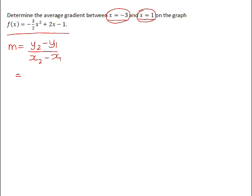If we want the y value when x = -3, we calculate the function value f(-3). If we want the y value when x = 1, we calculate f(1). Then in the denominator, we have -3 - 1.